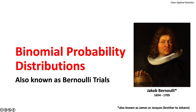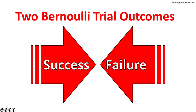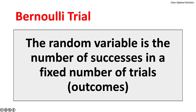Binomial probability distributions are also known as Bernoulli trials, after Jacob Bernoulli, a prominent 17th century mathematician and older brother to another important mathematician, Johann Bernoulli. A binomial probability distribution shows the probabilities associated with discrete random variables generated by Bernoulli trials. A Bernoulli trial is an experiment with only two outcomes: success or failure. A success means that a variable meets the criterion, and failure means that a variable fails to meet the criterion. A Bernoulli trial measures the number of successes in a fixed number of trials.